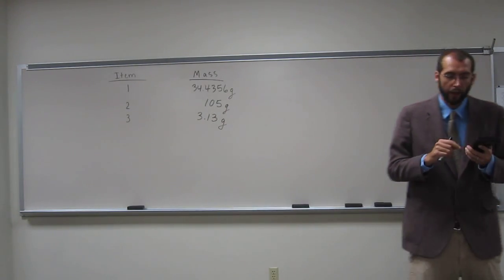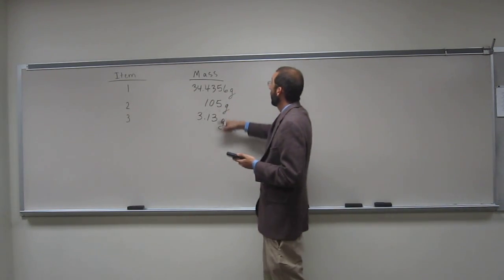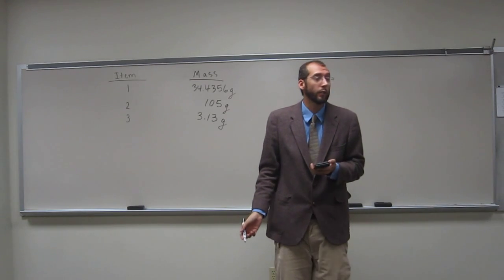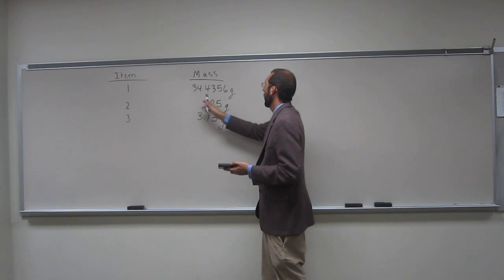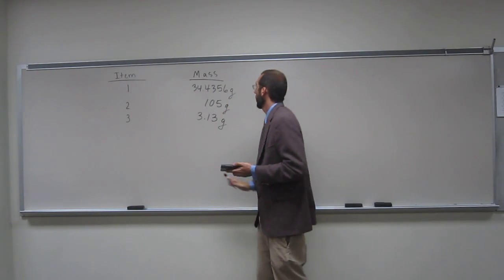So, how would we do that? What we would have to do is add these three numbers up and then go to the one with the lowest decimal point. In this case, what is the lowest decimal point? I guess what I mean is the least numbers after the decimal point, I should say.